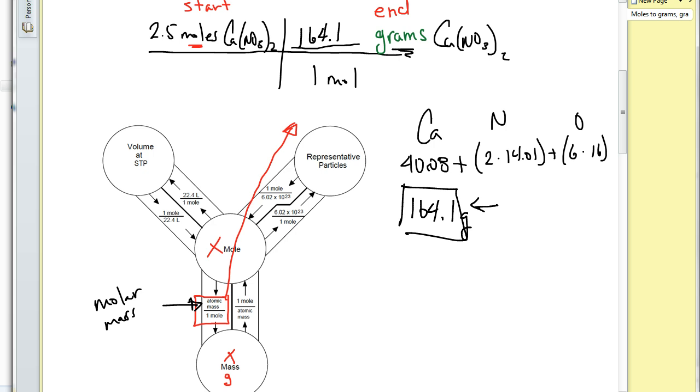And so now we just have a multiplication problem. We've set it up just like we normally set up mole problems. And we're going to cancel out moles and moles. And so we're going to go 2.5 times 164.1. And the answer comes out to be 410, we'll call it .3 grams of calcium nitrate. And that's our answer.